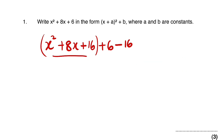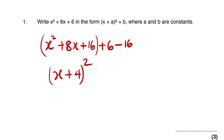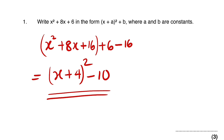This trinomial is a perfect square trinomial, which can be factorized as x plus half the coefficient of x — half of 8 is 4 — all squared. Then 6 minus 16 is negative 10. This is the form we are asked to compute, where a is 4 and b is negative 10.